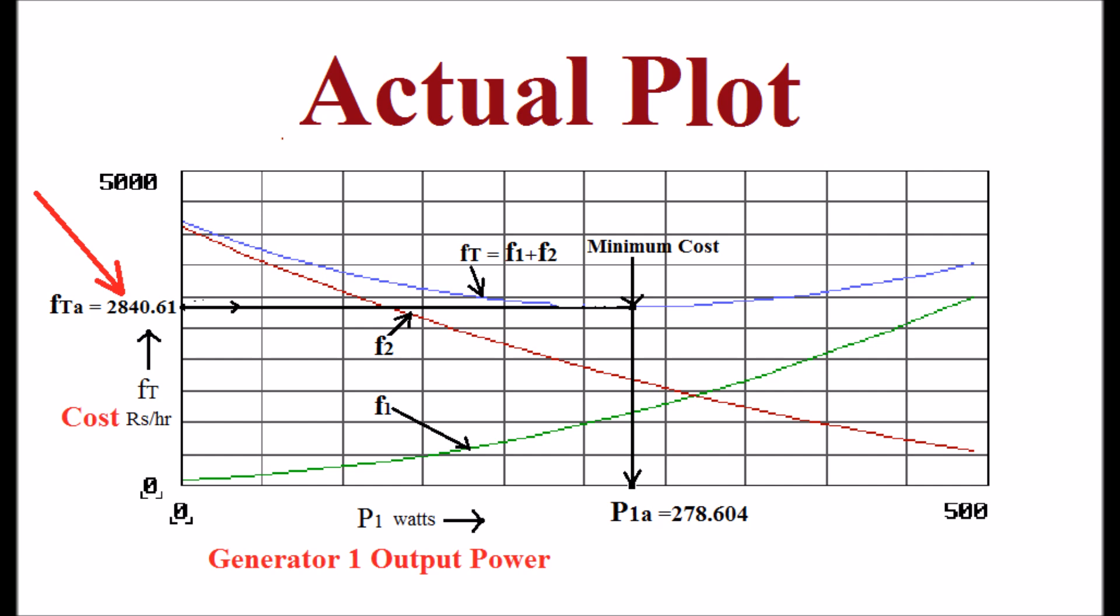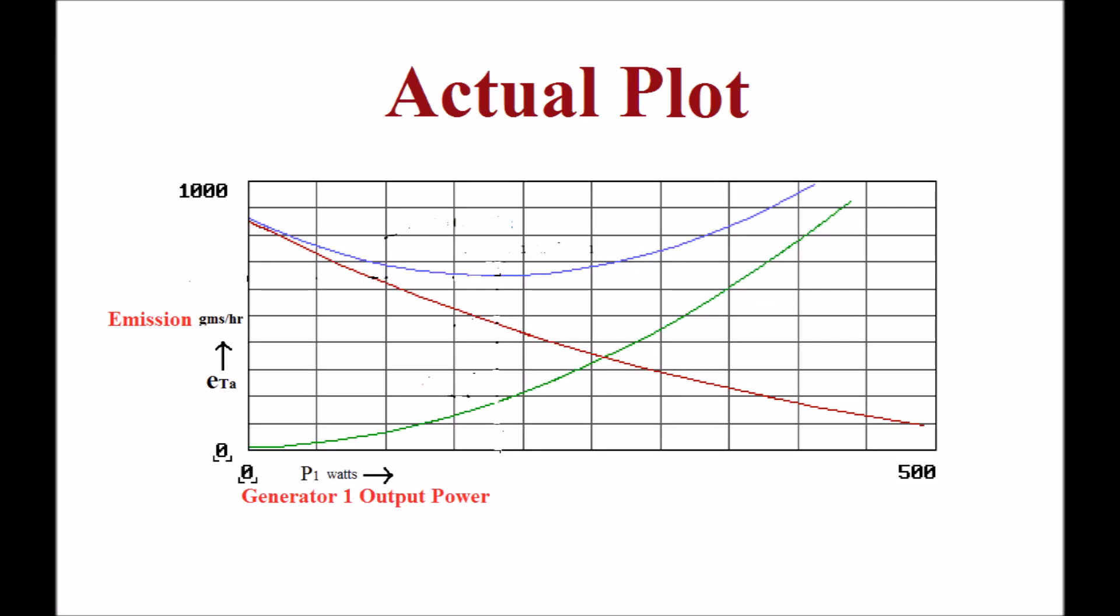Similarly, emission for plant 1, emission for plant 2 and total emission are shown in the display. The minimum value of emission is 647.963 grams per hour.